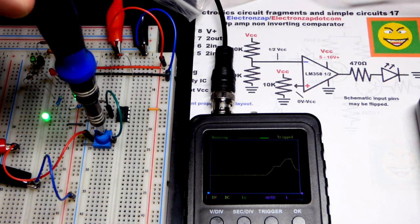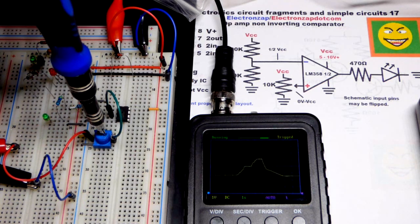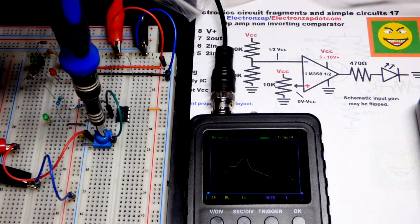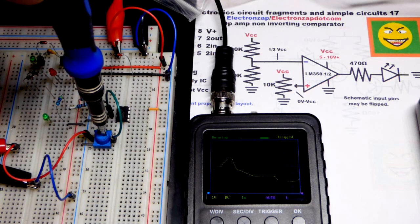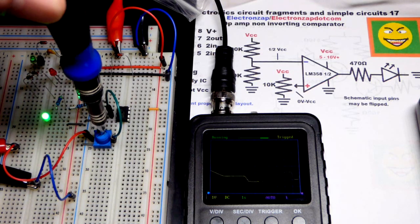But the main thing is we have to get this voltage to that voltage that we set. If it's below that voltage, the output goes low. If it's above that voltage, the output goes high right there.